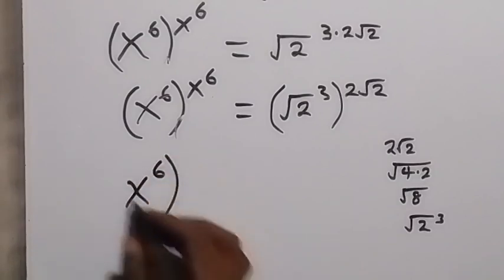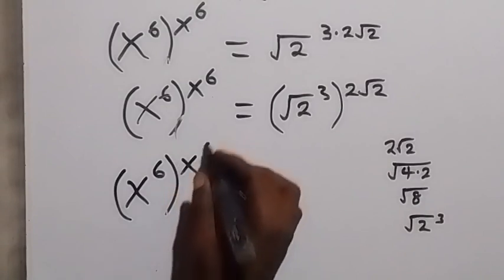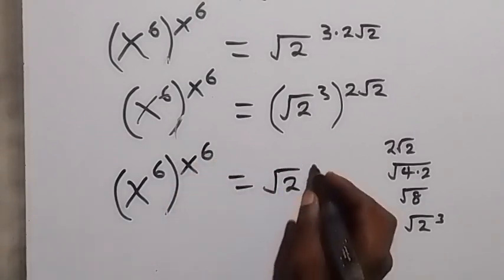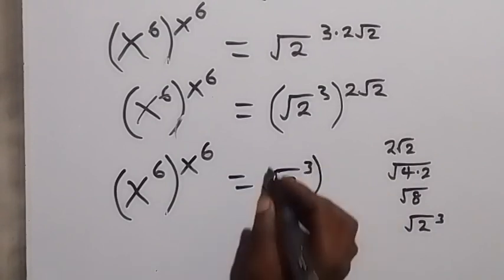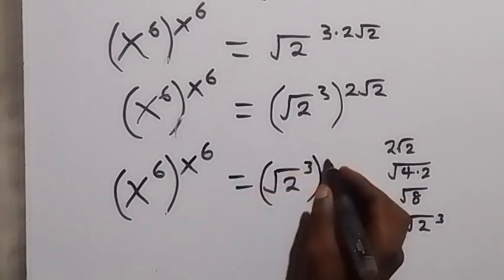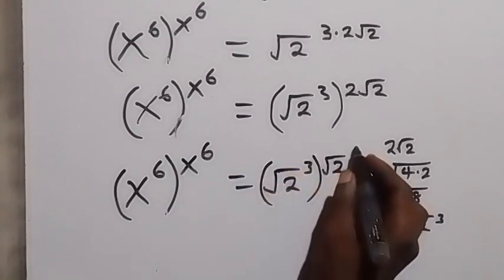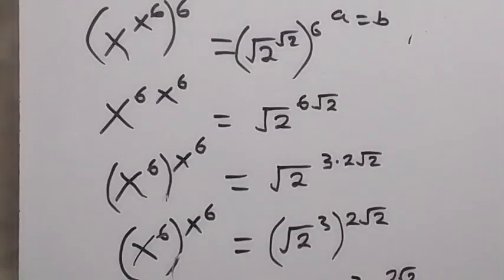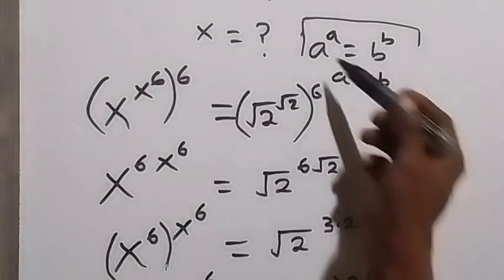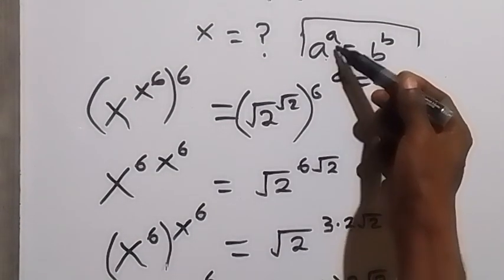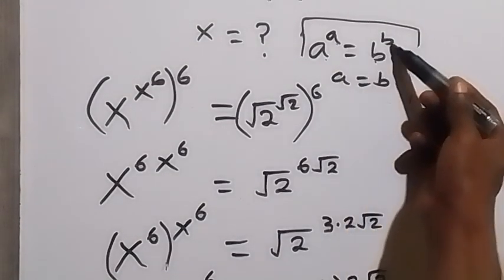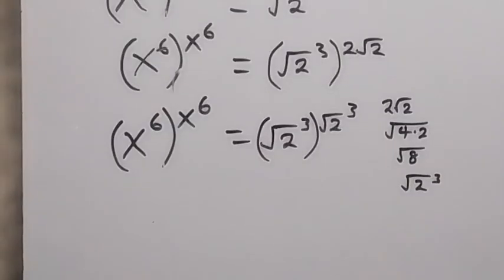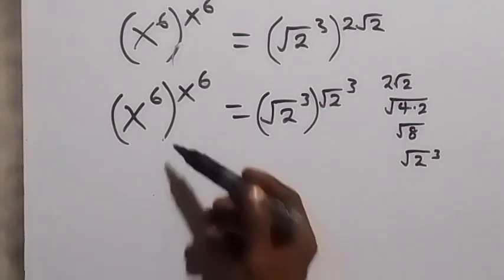This will become x raised to power 6, raised to power x raised to power 6, equals root 2 to the power of 3, also raised to root 2 to the power of 3. When we look at what we established earlier, this format now follows that the base has the same power — the base seems to have the power.